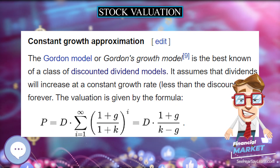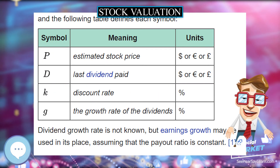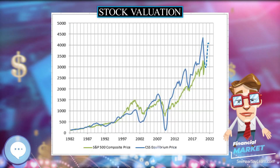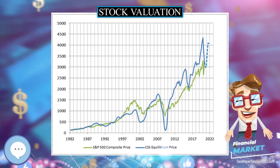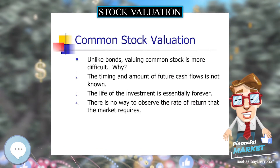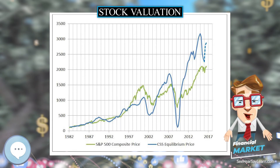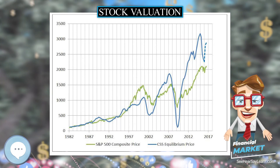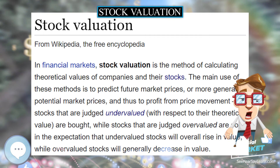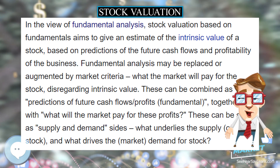EBITDA stands for Earnings Before Interest, Taxes, Depreciation and Amortization. It is one of the best measures of a company's cash flow and is used for valuing both public and private companies. To compute EBITDA, use a company's income statement, take the net income and then add back interest, taxes, depreciation, amortization, and any other non-cash or one-time charges. This leaves you with a number that approximates how much cash the company is producing.